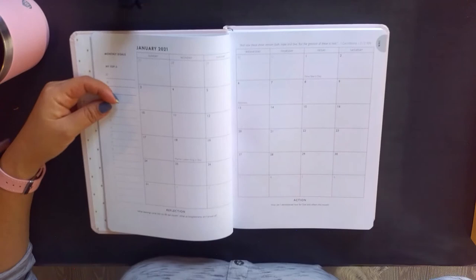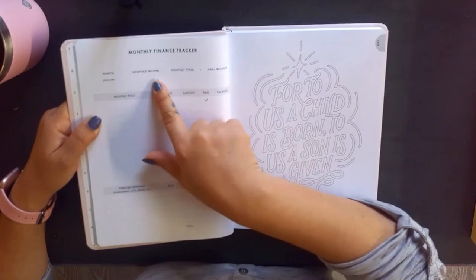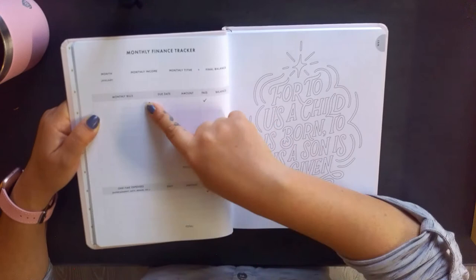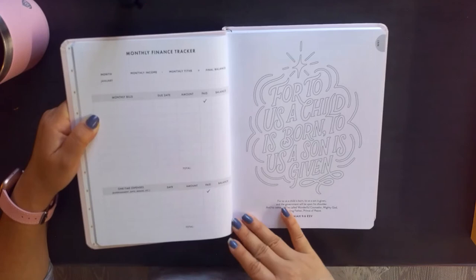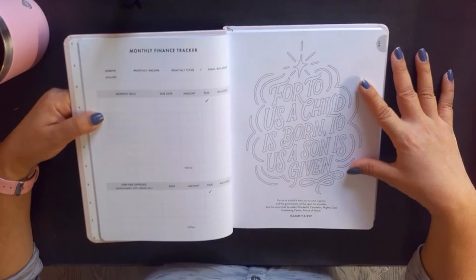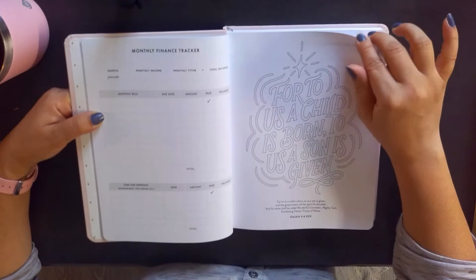And then after monthly, oh here is a monthly finance tracker. So it gives you your month, your monthly income minus your monthly tithe and then your final balance. And room to write your bills, the due date, the amount, whether or not you've paid it, and then your new balance. And then one-time expenses, so things like entertainment, gifts, repairs, etc. So it has the same marks here. Here it's got like a coloring page you could do. This one says 'For to us a child is born, to us a son is given,' and then it has the scripture from where it's from, Isaiah 9:6. Oh and this one's in the ESV, so I guess not all the scripture is from NIV.